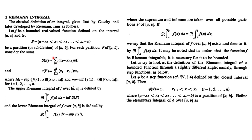We add all these maximum values over each sub-interval to get the upper sum, denoted by S(P). Similarly, we find the lower sums, which is the sum of the smallest value of the function over each sub-interval multiplied by its length. Here xᵢ minus xᵢ₋₁ is the length of the interval, representing the area of each rectangle under the function.